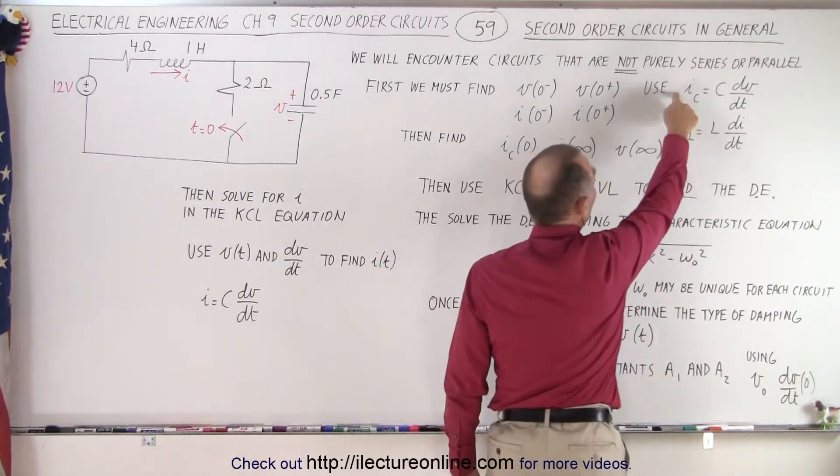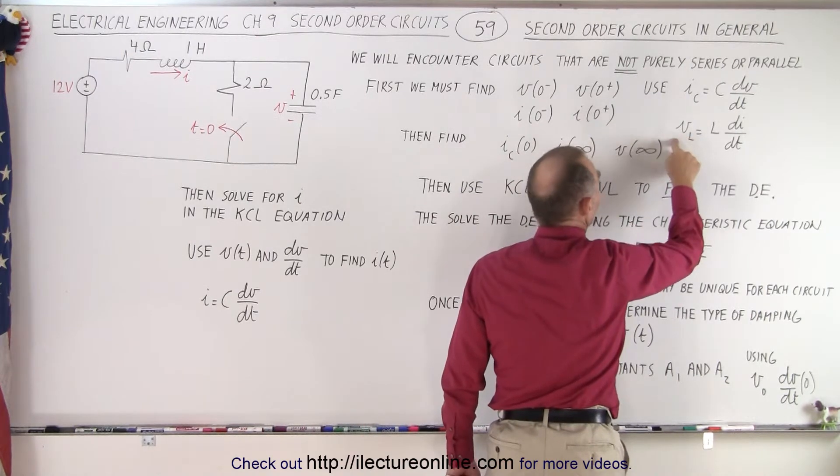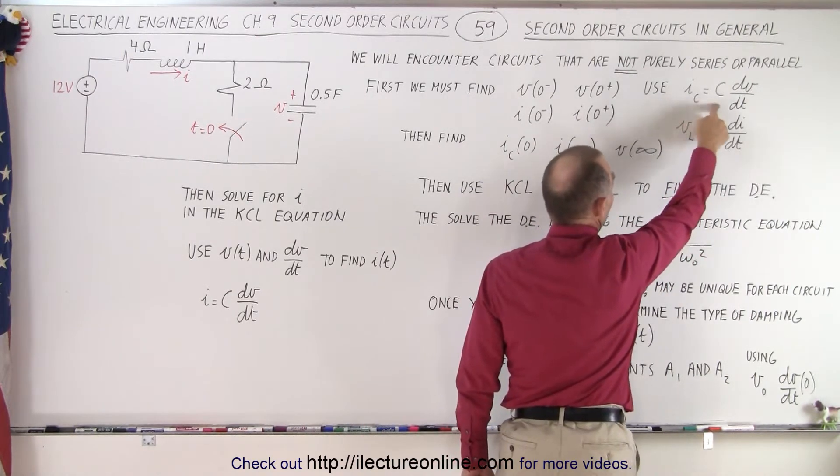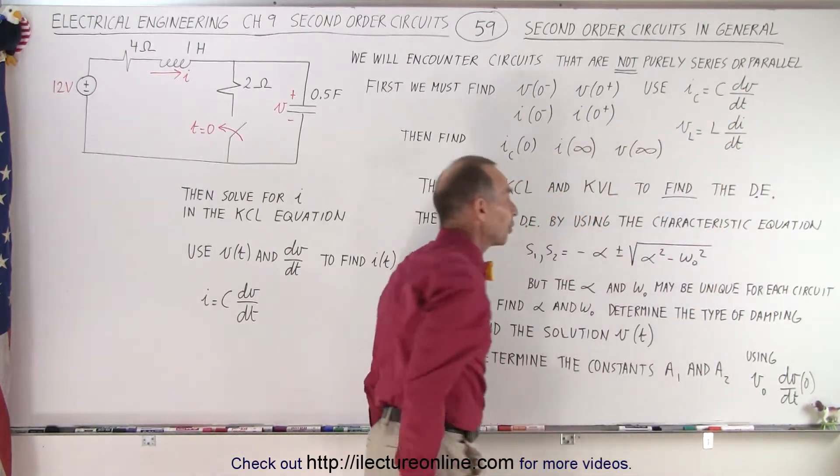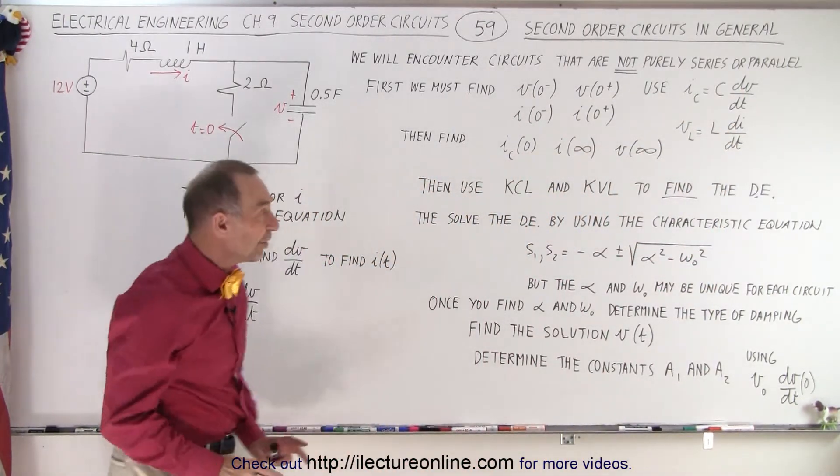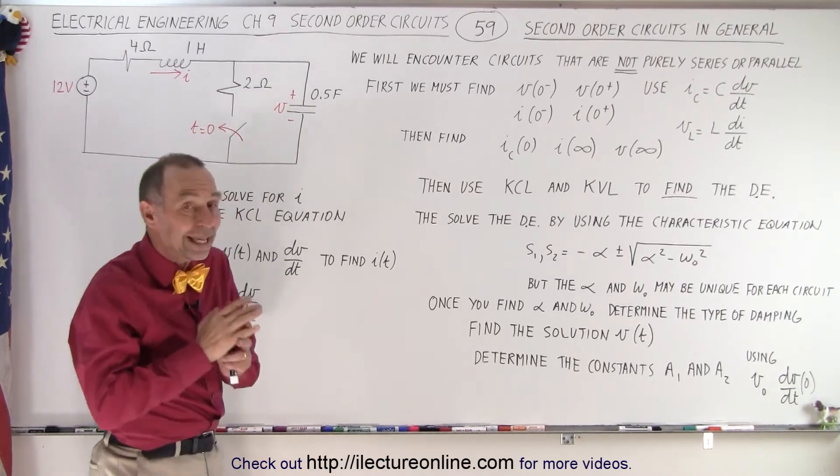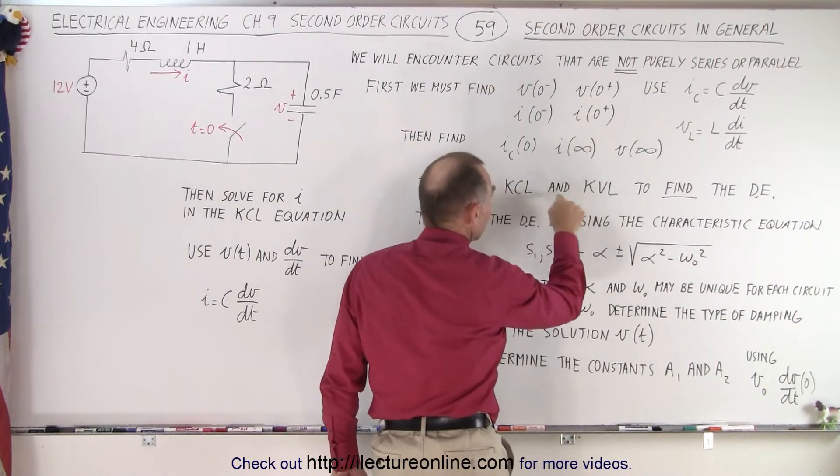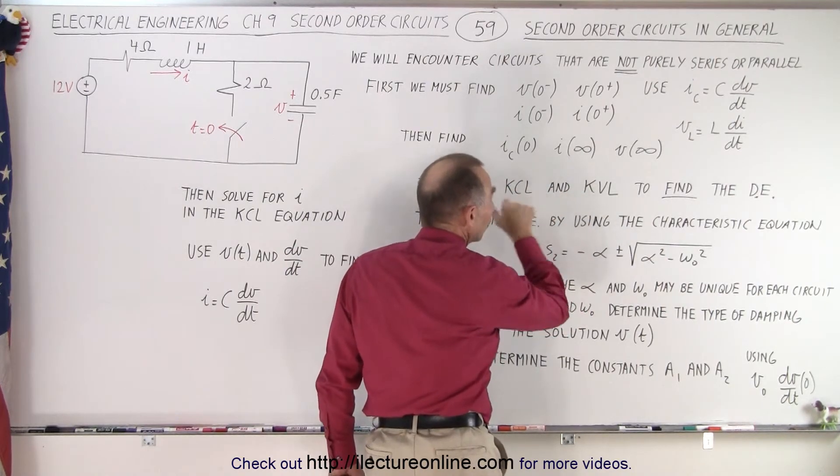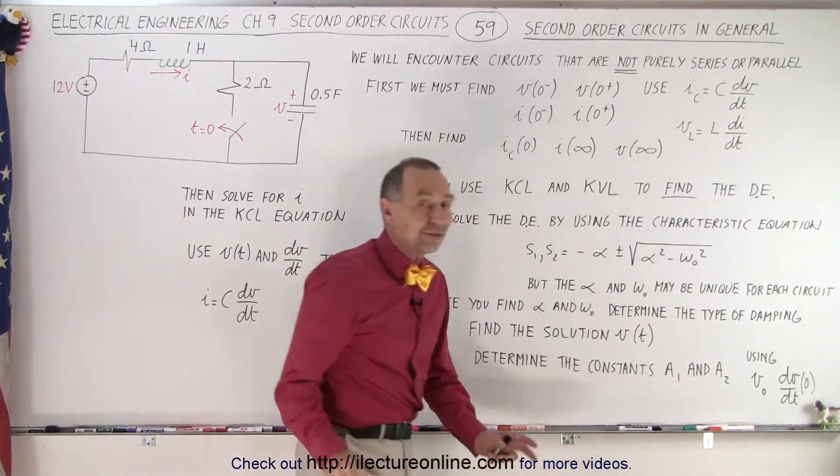We will make use of these two equations, ICL and VL, so in other words, the current through the capacitor and the voltage across the inductor, in terms of their two equations. Once we've done that, we then have to use the KCL and the KVL, the current loop and the voltage loop of the Kirchhoff's rules, and use those equations to find the differential equations.